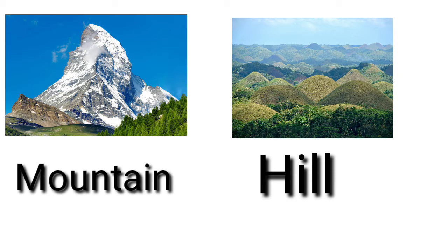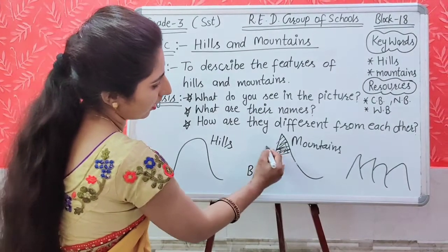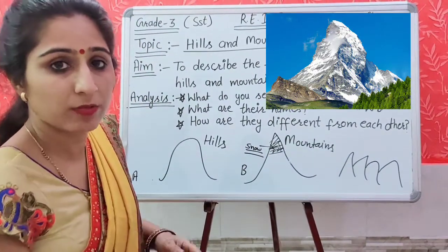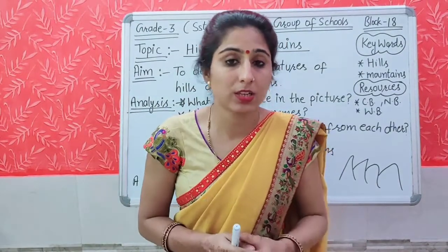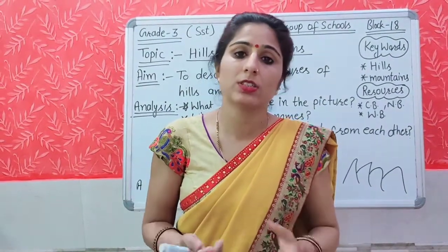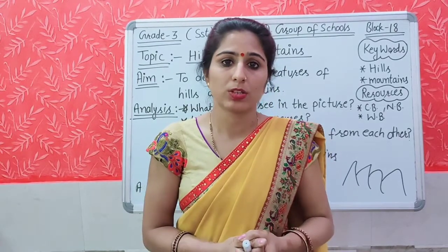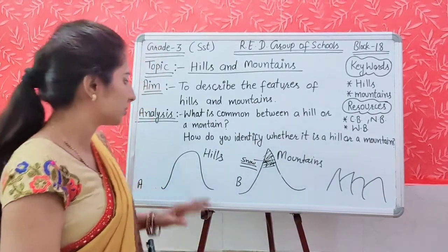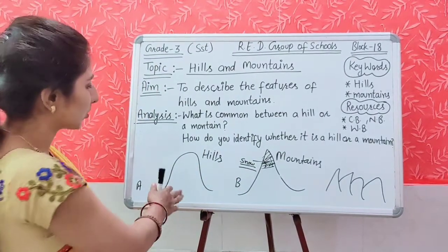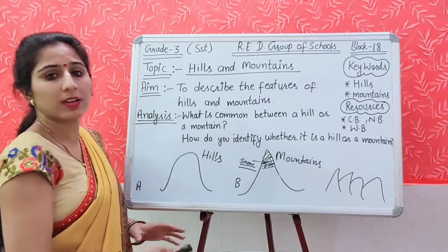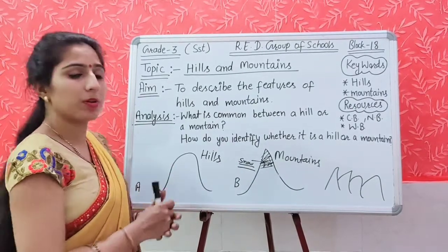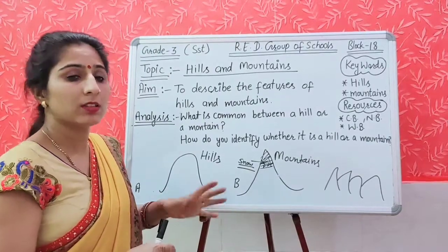You can see that the mountains are covered with snow. You might have heard about these snow-covered mountains — rivers are originated from these mountains only. What is common between a hill and a mountain? Both hills and mountains are taller and higher than the surrounding area.